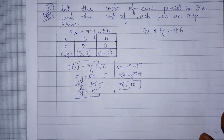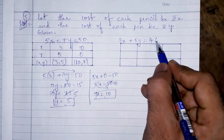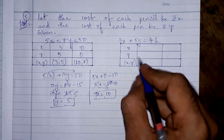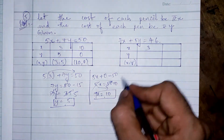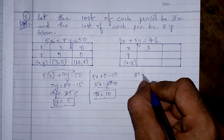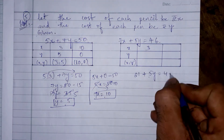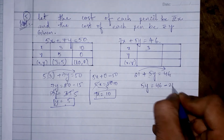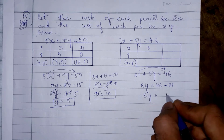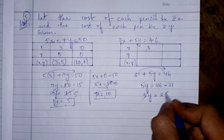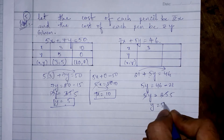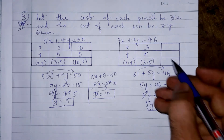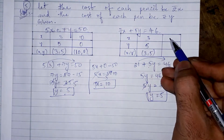For the equation 7x + 5y = 46, let us make an x-y table. Taking x = 3, we get 7 × 3 = 21, so 5y = 46 − 21 = 25, giving y = 5. So one point is (3, 5).